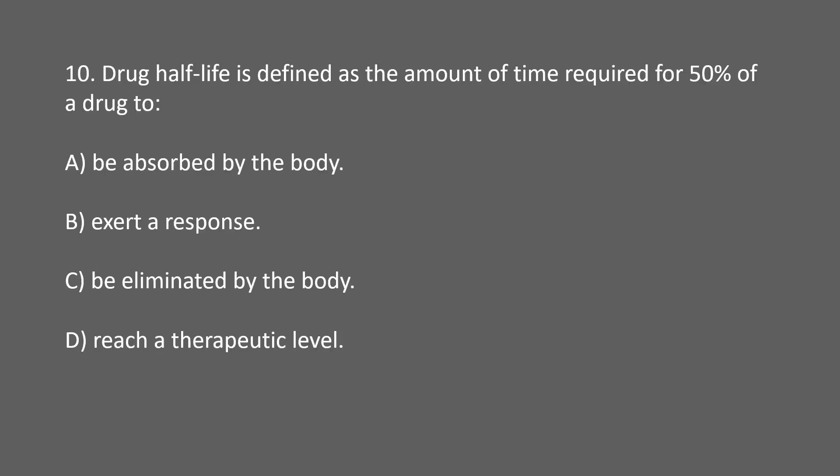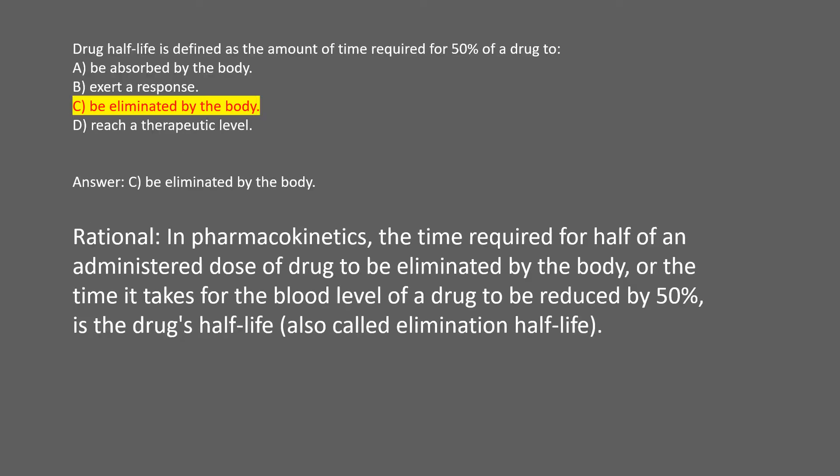Drug half-life is defined as the amount of time required for 50% of a drug to: A. be absorbed by the body. B. exert a response. C. be eliminated by the body. D. reach a therapeutic level. Answer: C. Be eliminated by the body. Rational: in pharmacokinetics, the time required for half of an administered dose of drug to be eliminated by the body, or the time it takes for the blood level of a drug to be reduced by 50%, is the drug's half-life, also called elimination half-life.